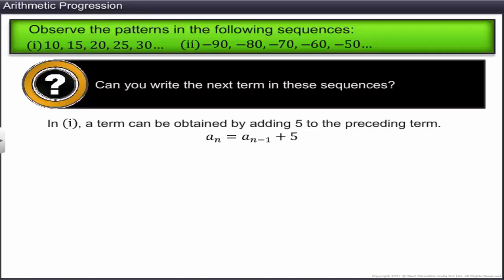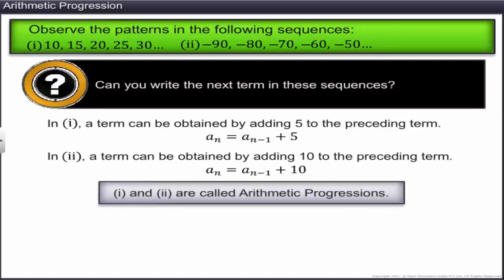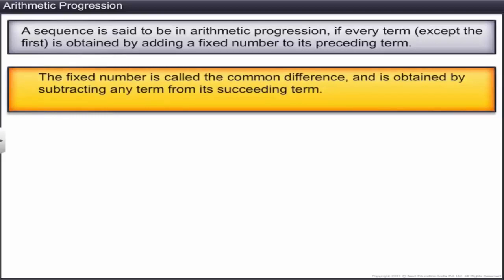In both sequences, successive terms are obtained by adding a fixed number to the term just preceding it. Such sequences are called arithmetic progressions. Mathematically, a sequence is in arithmetic progression if every term except the first is obtained by adding a fixed number to its preceding term. This fixed number is called the common difference, obtained by subtracting any term from its succeeding term: d = aₙ − aₙ₋₁.